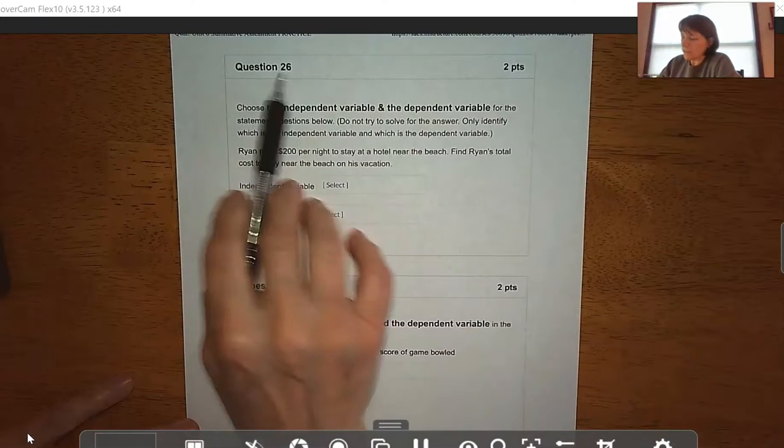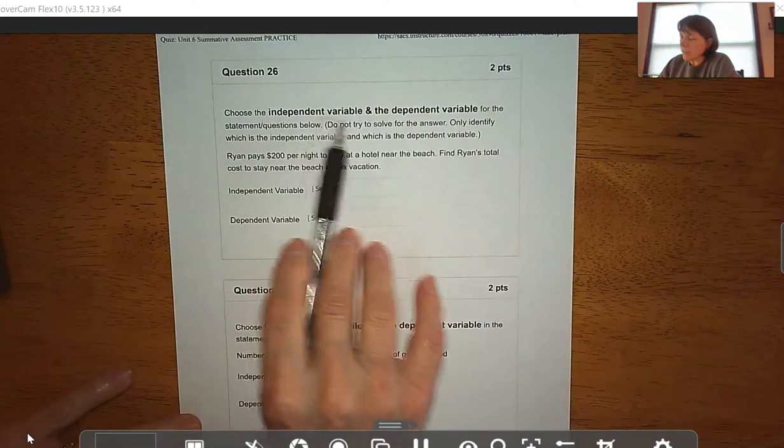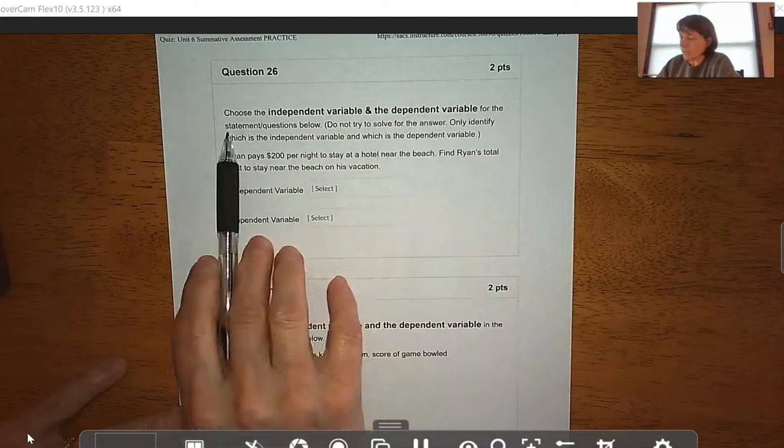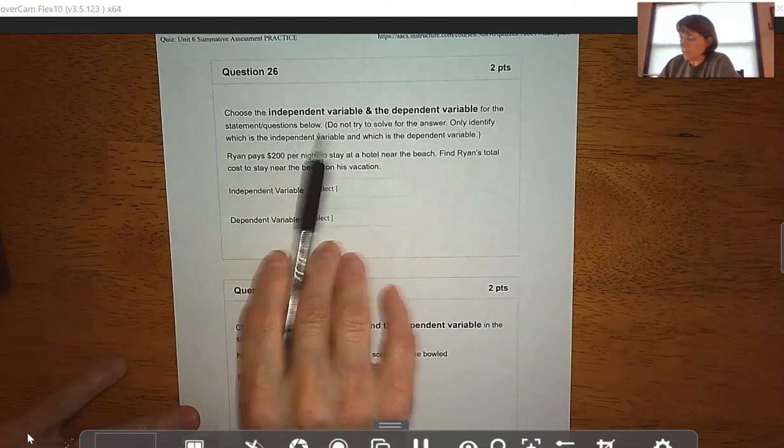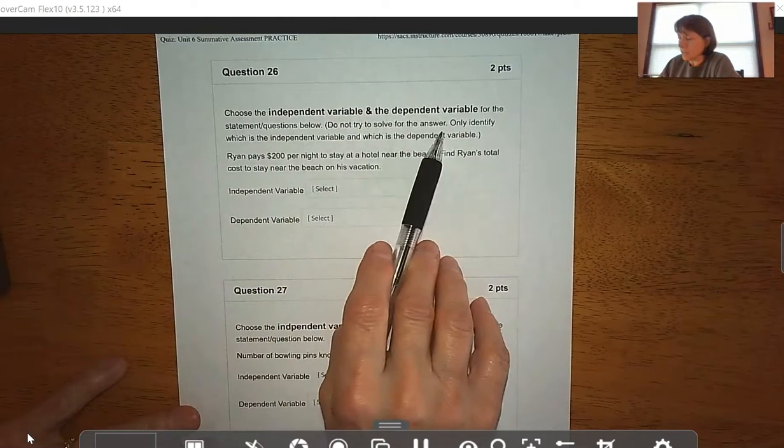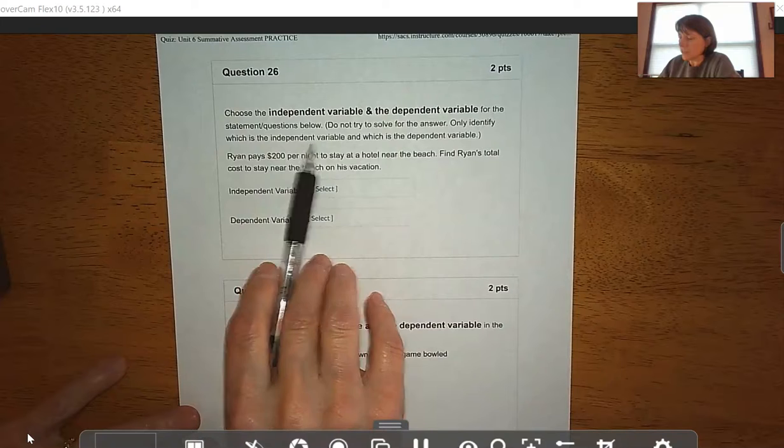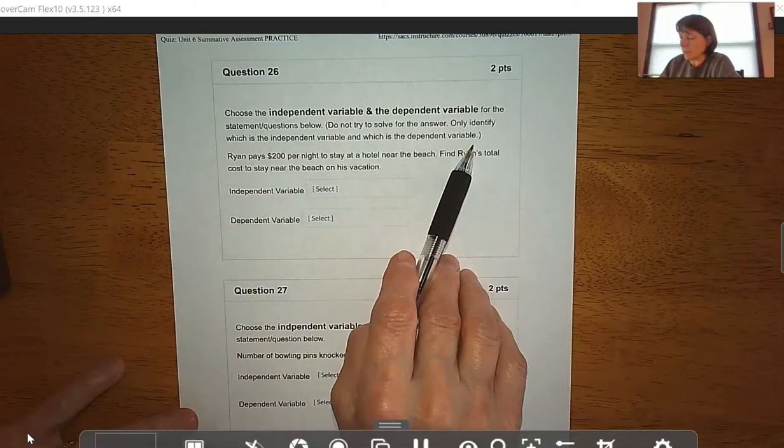Okay, so we're on to number 26 here. Choose the independent variable and the dependent variable for the statements or questions below. Do not try to solve for the answer, only identify which is the independent variable and which is the dependent variable.